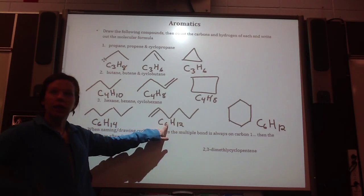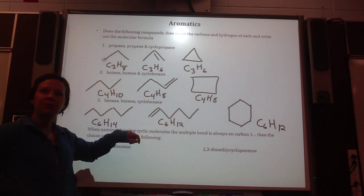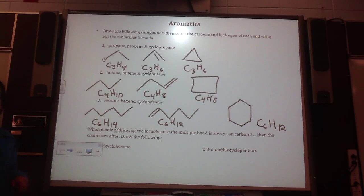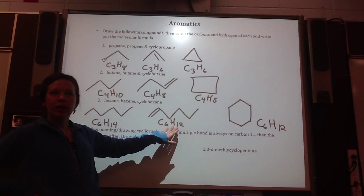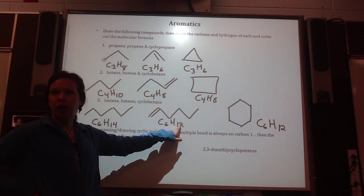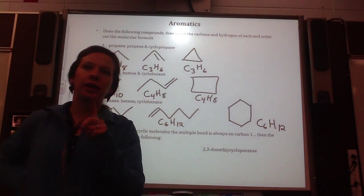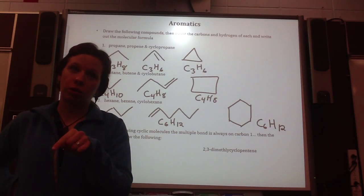For an alkene, if you use the formulas that we did in our assignment yesterday, take the number of carbons and multiply by 2 and that will give you your hydrogens. Alkynes, we multiplied the carbon by 2 and then minus 2.